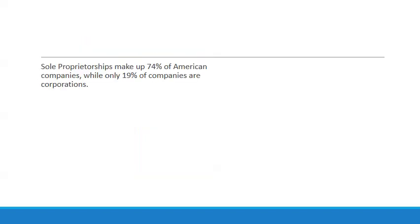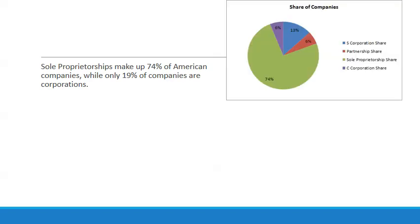Sole proprietorships make up 74% of American companies, but only 19% of companies are corporations. When we refer to corporations, we're referring to both S and C corporations together — that's 19% versus the 74% of sole proprietorships.